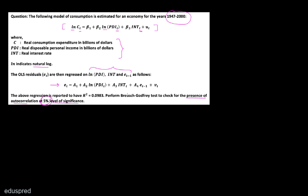We have to test for the presence of autocorrelation, and the test we are working with is the Breusch-Godfrey test. According to the Breusch-Godfrey test, the second equation is called the auxiliary regression. This R² that you see is for this auxiliary regression.